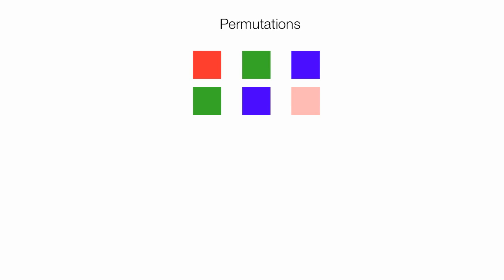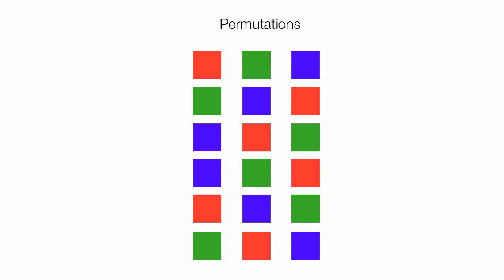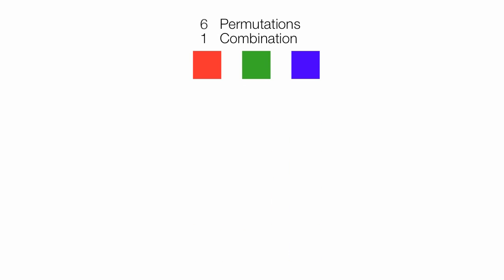I can take these three squares and make six permutations. Let me fill in all the squares and all the different permutations — there's one, two, three, four, five, six permutations without repeating, and only one combination. So we have six permutations and one combination possibility.